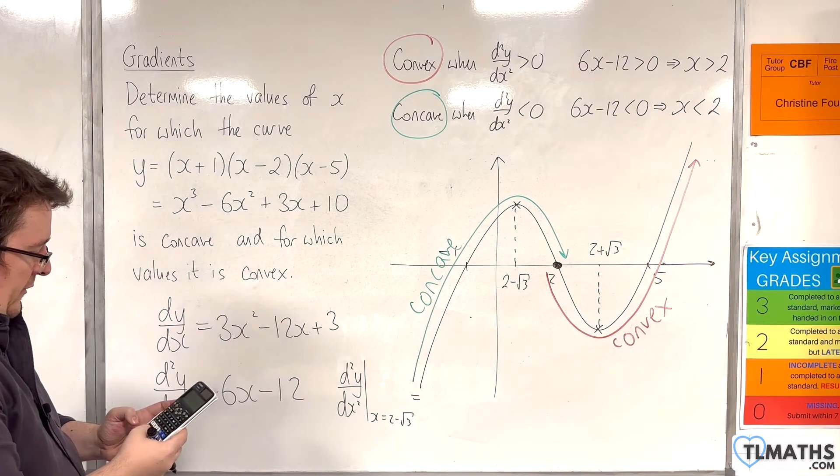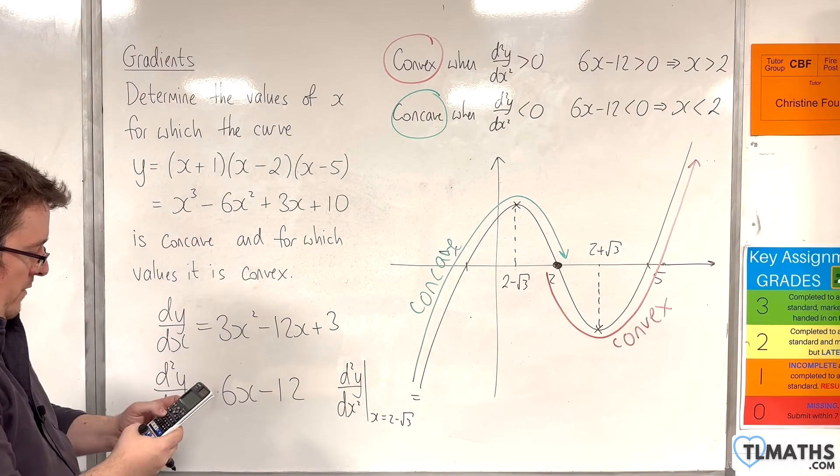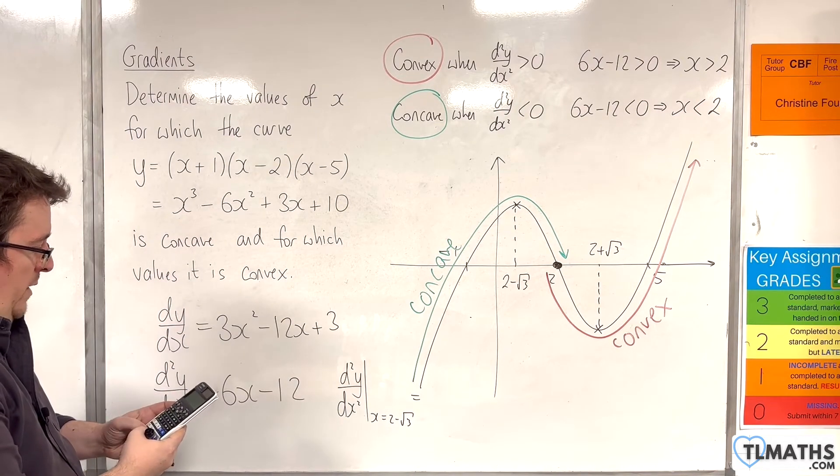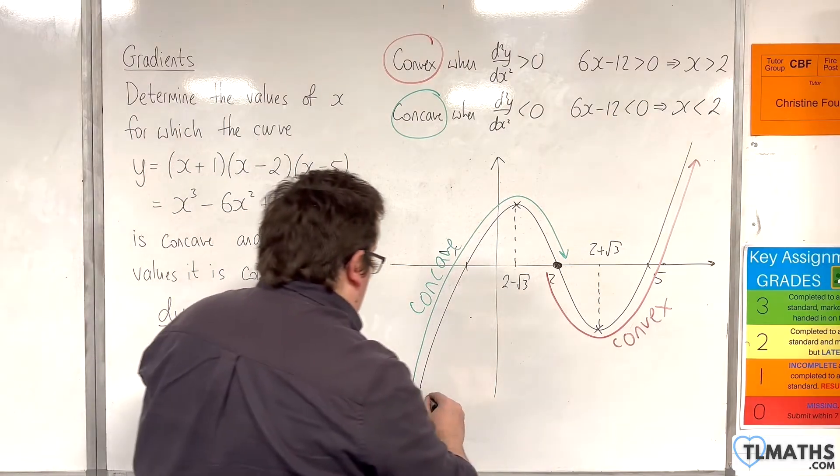So, 6 lots of 2 - √3. Take away 12. Is -6√3.